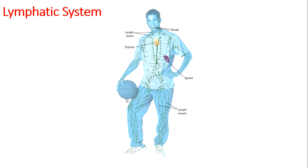Lymphatic vessels are all over your body. Fluid that travels through the lymph vessels flows into organs called lymph nodes. Humans have more than 500 lymph nodes. Lymph nodes work together to protect the body by removing toxins, waste, and other harmful substances. The lymphatic system also makes white blood cells, which help the body defend against infections.